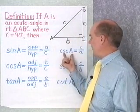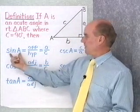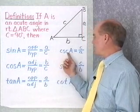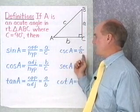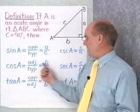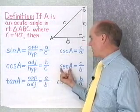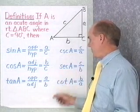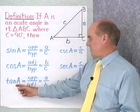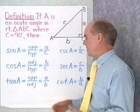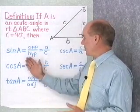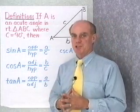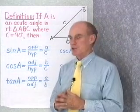Cosecant is defined as the reciprocal of sine. So if sine is A over C, cosecant is C over A. Cosine of A is B over C, so its reciprocal, secant of A, is C over B. And likewise for the relationship between tangent and cotangent. Here's the second definition for the six trigonometric functions, given in terms of a right triangle.